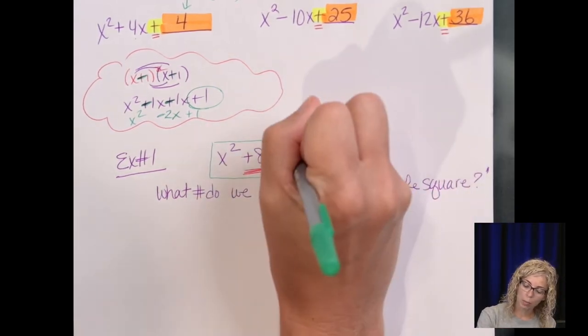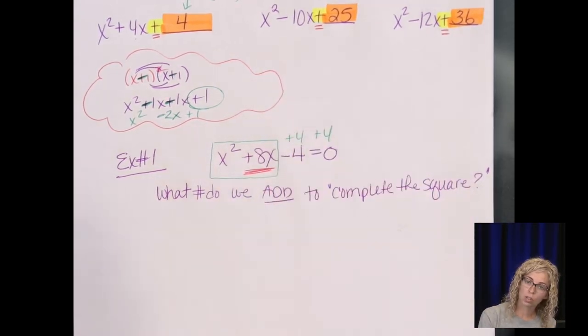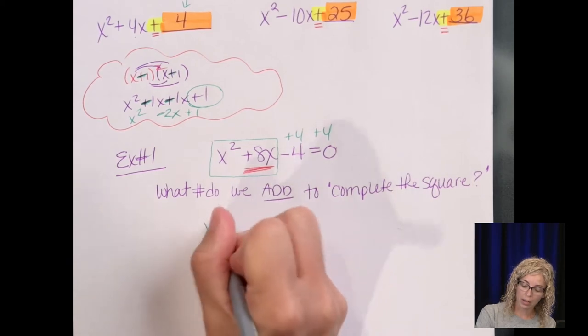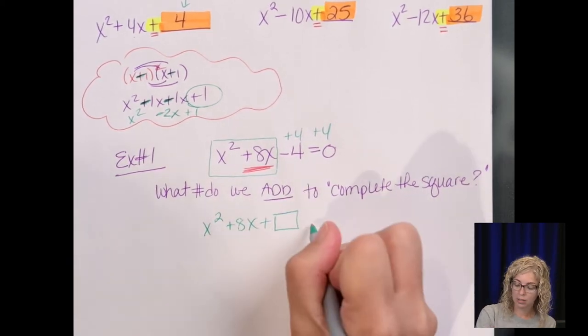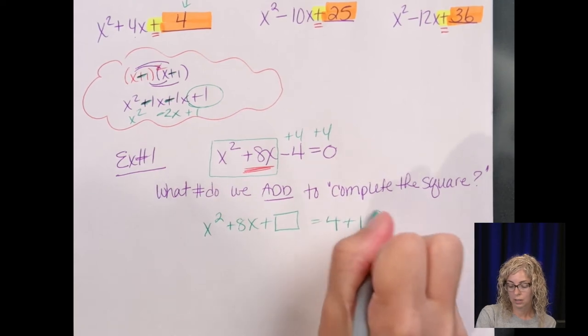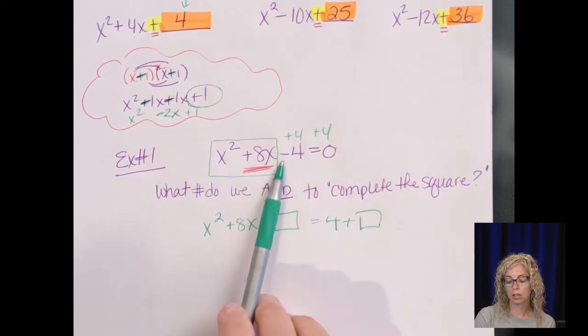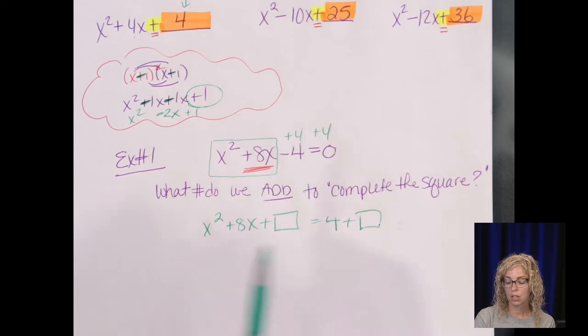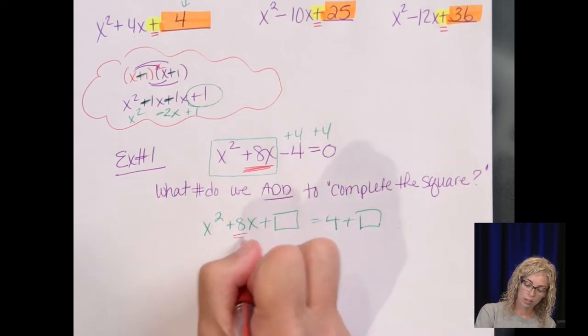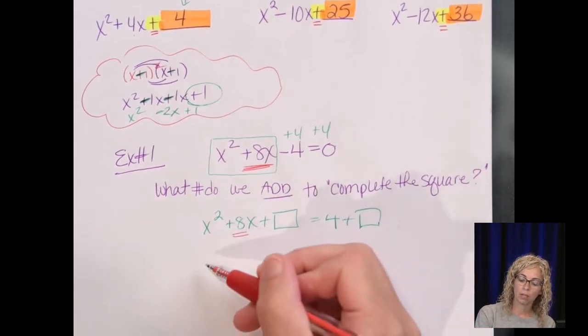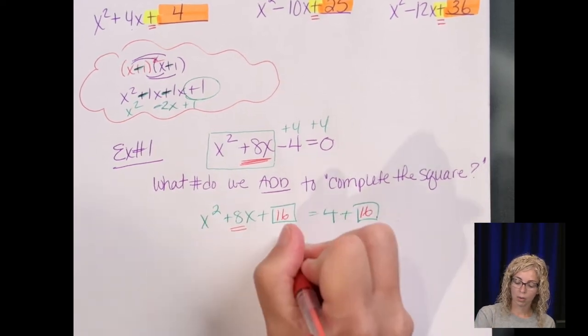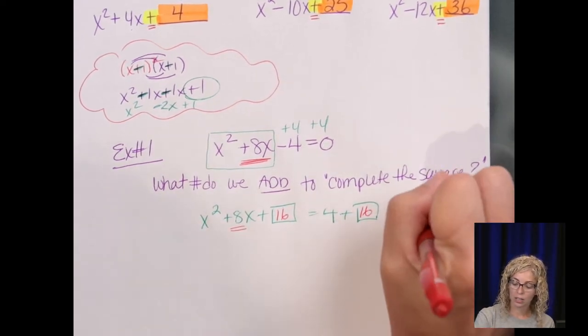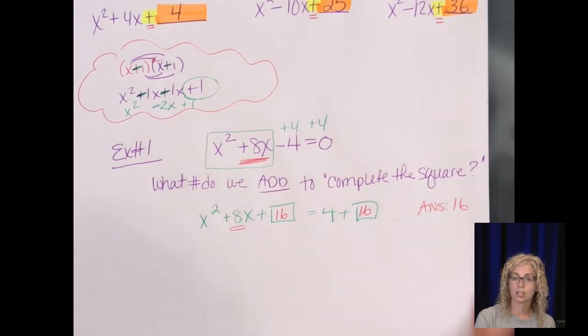We can get rid of that 4 by moving it to the other side. Some teachers might have called this the box method. Move the c, add the box. When the negative gets moved to the other side, it becomes positive. So then half of 8 is 4, and 4 squared is 16. So what number do we add? Our answer is 16.